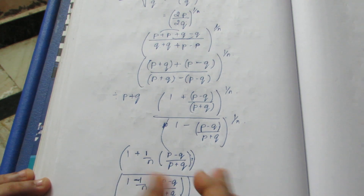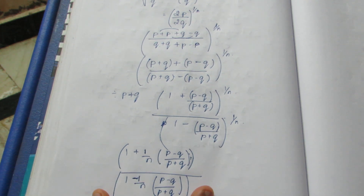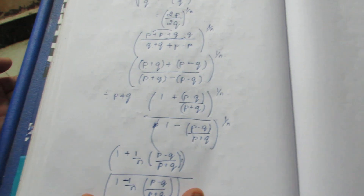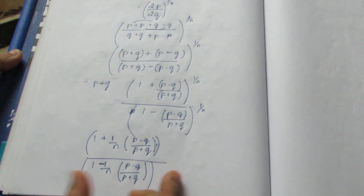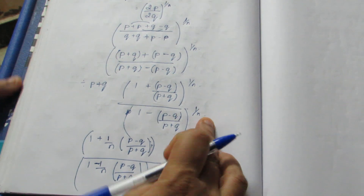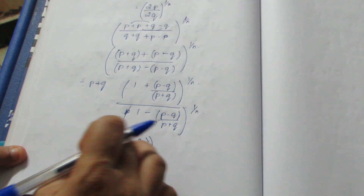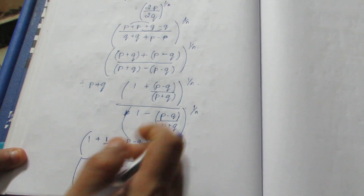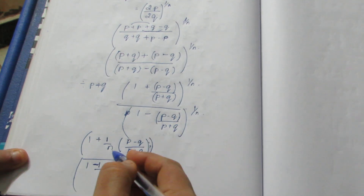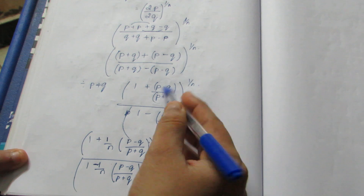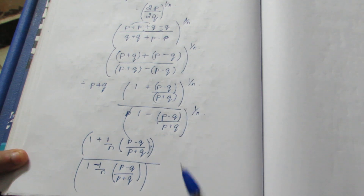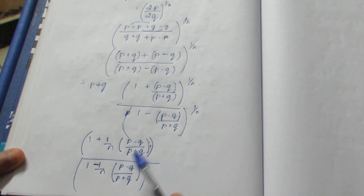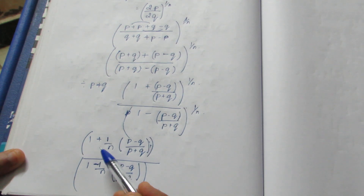So, using the binomial expansion, when the power is 1 by n, we use 1 plus nx. Replacing nx with (1 by n) into the x value, we get the numerator. Similarly, the same is applied to the denominator.